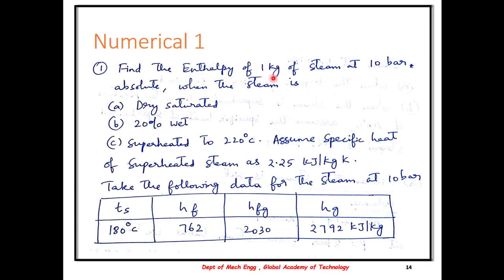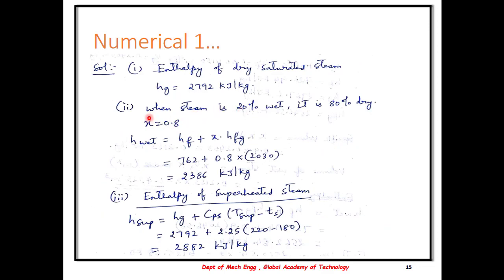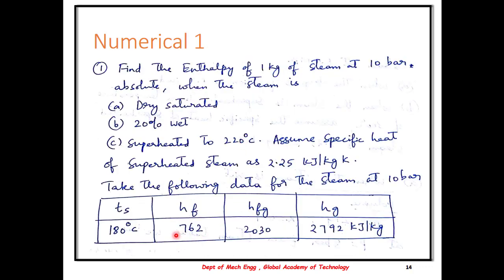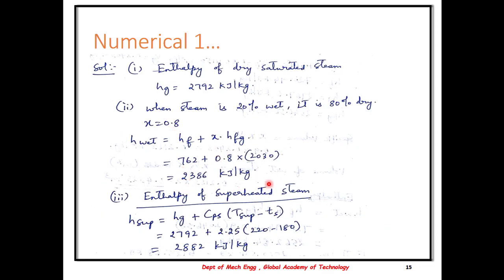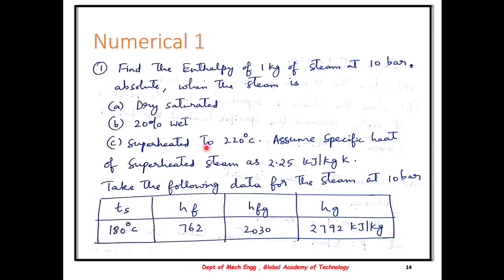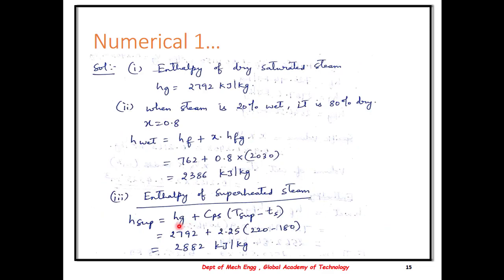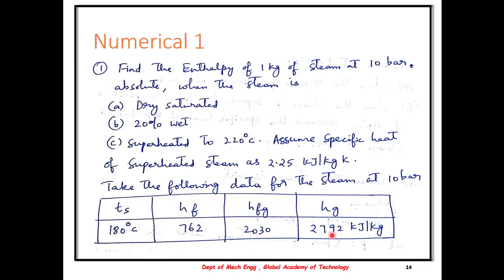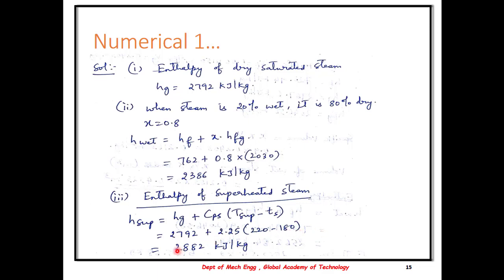For the second case, we find the enthalpy for 20% wet steam. When steam is 20% wet, it implies it is 80% dry, hence X becomes 0.8. The HF and HFG values are picked from the steam tables, and with X being 0.8, the enthalpy is calculated as 2386 kJ per kg. For the third case — superheated to 220 degrees Celsius — the formula is HG plus CPS into T superheated minus TS. Substituting the values, the superheated enthalpy is found as 2882 kJ per kg.